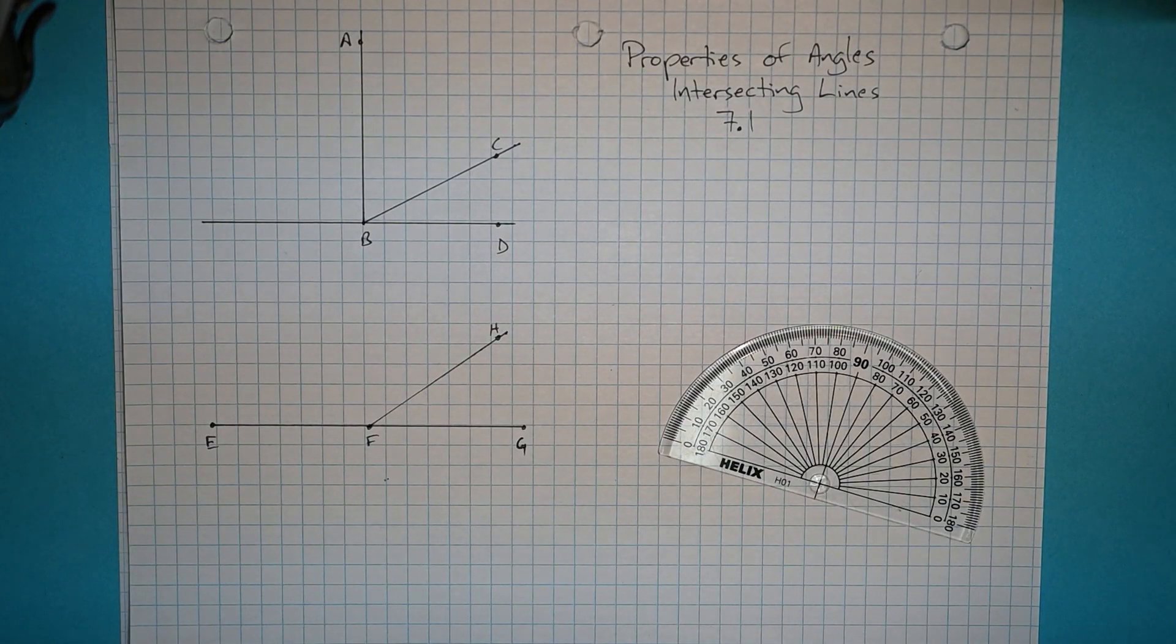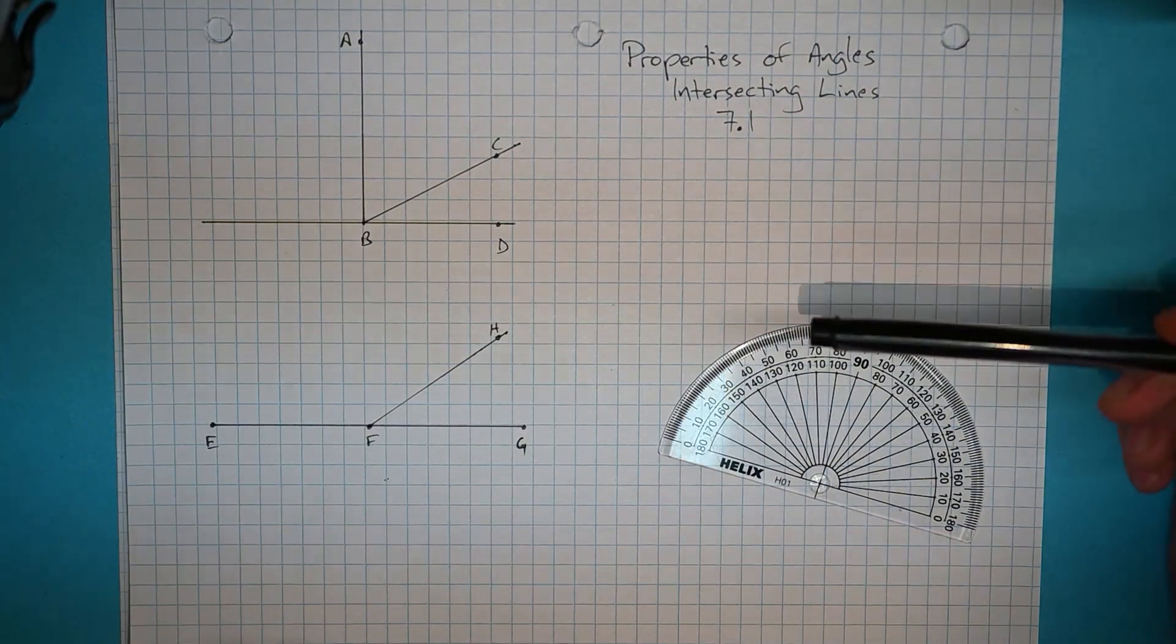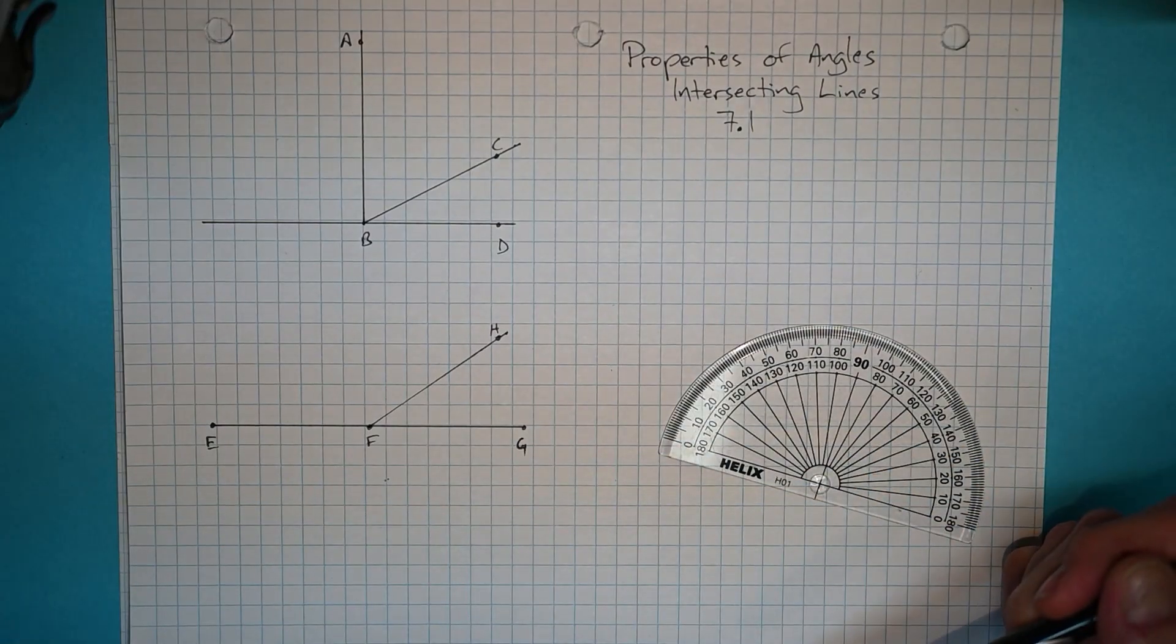Okay, welcome back everybody. This is our second video in our geometry series and today we're going to take a look at the properties of angles that form when you have intersecting lines.